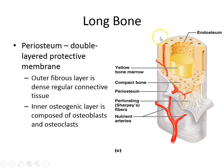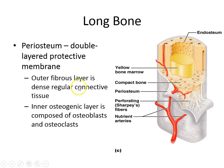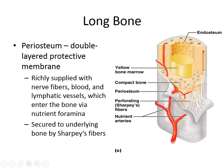You've got the periosteum lining the whole outside of your bone — a double-layer membrane with fibrous connective tissue, and then the inner osteogenic layer where you've got your osteoblasts and osteoclasts building and breaking down bone. You've got lots of blood flow coming into your periosteum through nutrient foramina, or holes, and the Sharpey's fibers that glue it down.